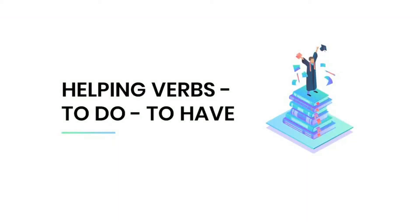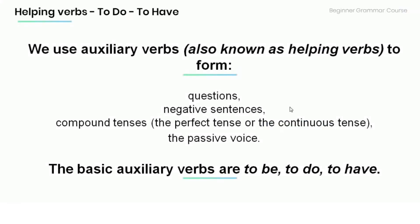Welcome to this tutorial. Today we're going to talk about the helping verbs 'to do' and 'to have'. Remember that we use auxiliary verbs, which are also known as helping verbs, to form questions, negative sentences, compound tenses, the perfect tense, the continuous tense, and the passive voice.